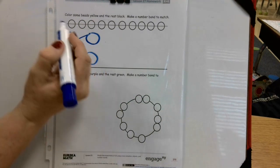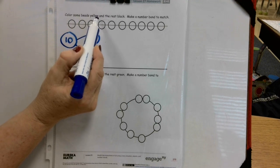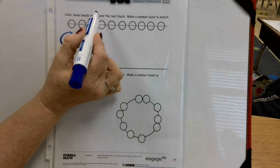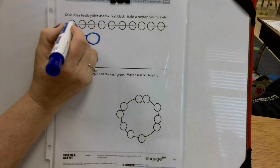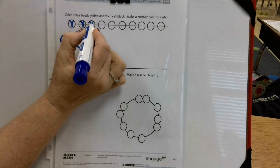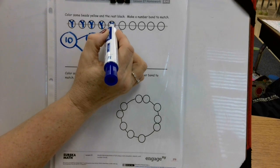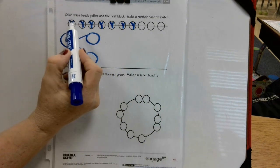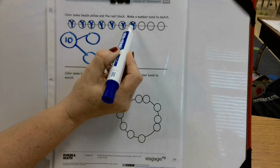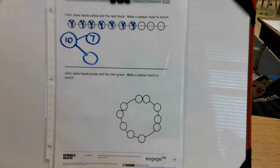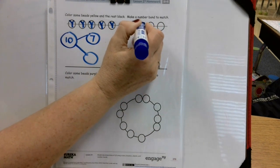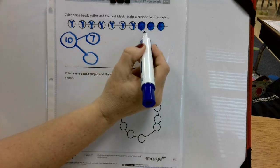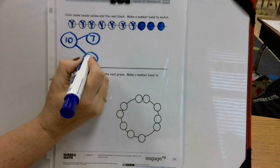So color some beads yellow. Okay, so let's count how many: one, two, three, four, five, six, seven. So I'm going to write the number seven here. And the rest will be black, so I'm just going to color those in: one, two, three. So how many do I have colored in? One, two, three. So I'm going to write the number three here.